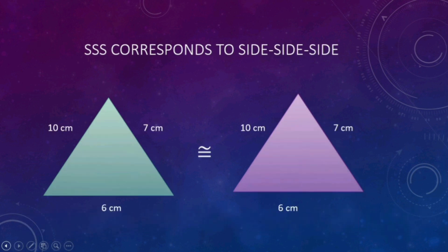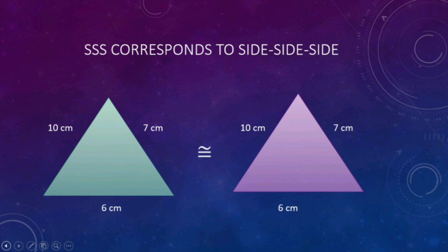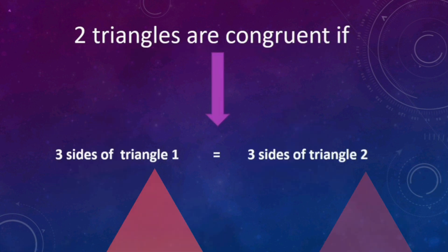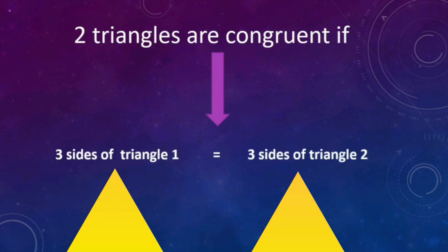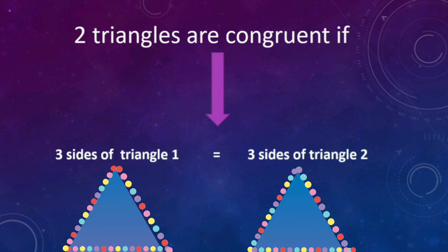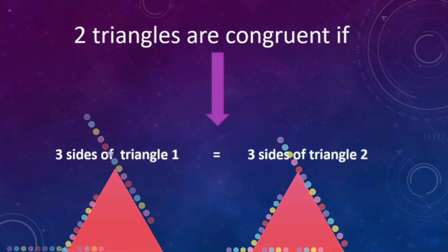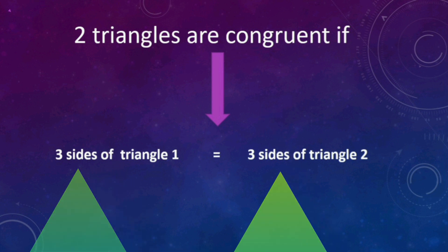SSS corresponds to side, side, side. If all three sides of one triangle are equivalent to the corresponding three sides of the second triangle, then the two triangles are said to be congruent by the SSS congruency rule. Two triangles are congruent if the sides of triangle 1 are equal to the sides of triangle 2.